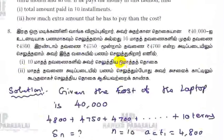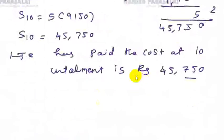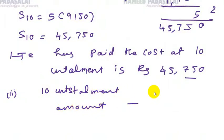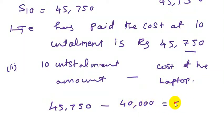Second question: how much extra amount does he have to pay compared to the cash cost? The extra amount equals the 10 installments amount minus the cost of the laptop: 45,750 minus 40,000 equals 5,750.